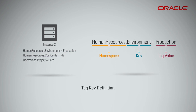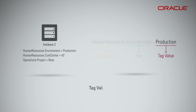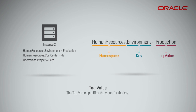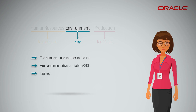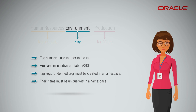A tag key definition defines the schema of a tag and includes a namespace and tag key. The tag value specifies the value for the key. The tag key is the name you use to refer to the tag — tag keys are case-insensitive, printable ASCII. Tag keys for defined keys must be created in a namespace, and a tag key must be unique within a namespace.